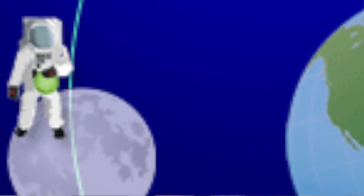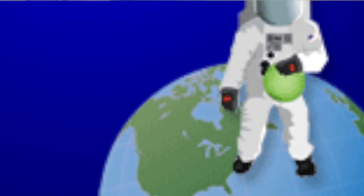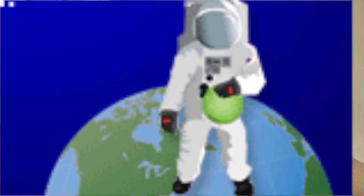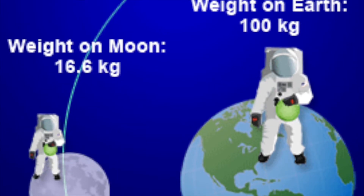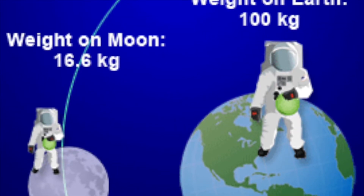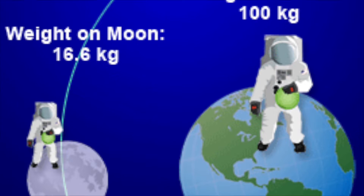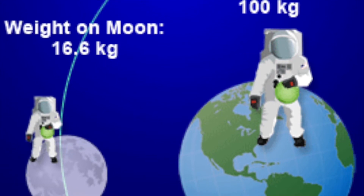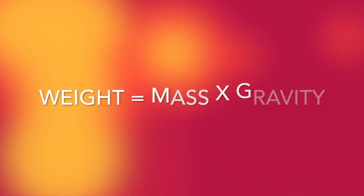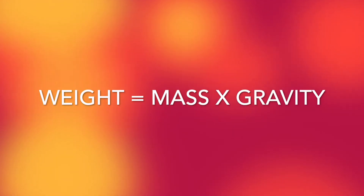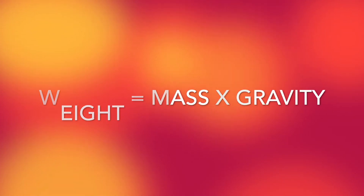If an object has 3 kilograms of mass, its weight is smaller on the Moon than on the Earth. The Moon has a weaker gravitational pull than the Earth, meaning objects on the Moon are lighter or have less weight than the same object on Earth. This is why you jump so high on the Moon. To find the weight of an object, you multiply the mass by the strength of the gravity.